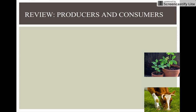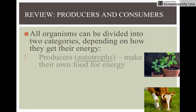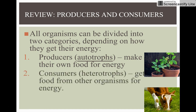A little review from last week: Producers and Consumers. All organisms can be divided into two categories depending on how they get their energy. You have a producer — autotrophs — that make their own food, like a plant. And consumers — heterotrophs — get food from other organisms for energy, like this cow that eats the plant, which is a producer.